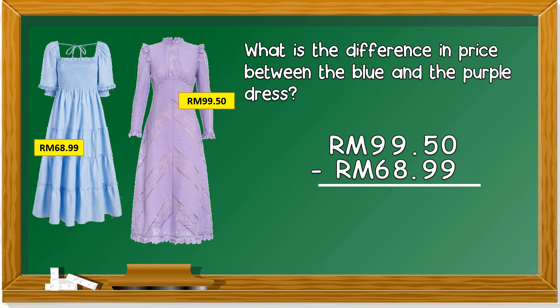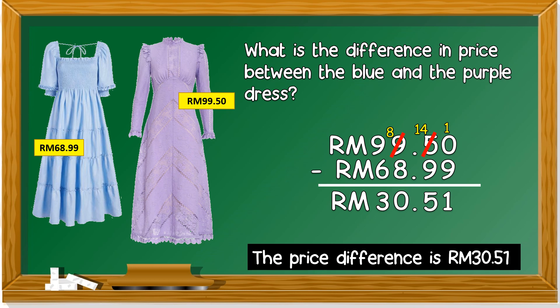We look at the numbers on the right. Can zero minus nine? No, we borrow from the neighbor — it becomes 10. 10 minus 9 is 1. Can 4 minus 9? No, we borrow again from the neighbor — it becomes 14. 14 minus 9: put 9 in your mouth, count up to 14: 9, 10, 11, 12, 13, 14 — five fingers open. Then 8 minus 8 is 0, and 9 minus 6 is 3. The price difference is 30 ringgit and 51 cents. Don't forget the dot.